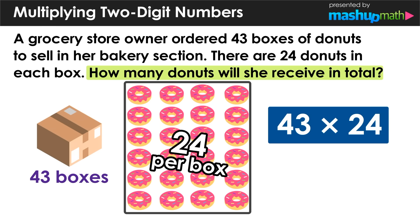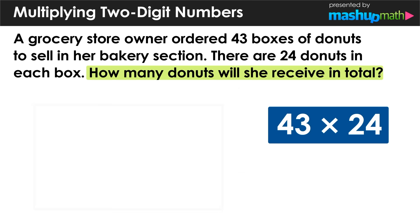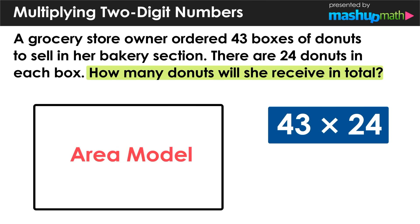It should be fairly easy to tell that we're going to have to multiply the 43 boxes by the 24 donuts in each box to find the total number of donuts. However, if you're a visual learner like me, multiplying numbers like 43 and 24 can be tricky if you don't have a visual model, so we're going to go ahead and create our own and use it to find the product.